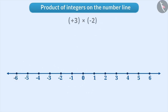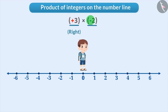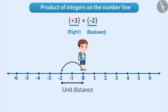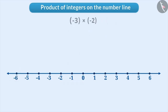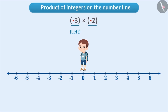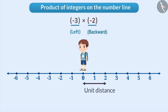In positive 3 into minus 2, the first number is positive, meaning the person is looking towards the right. Since the second number is negative, he will take three steps of two unit distance in the backward direction. Therefore, the result of multiplication is minus 6. In minus 3 into minus 2, the first number is negative, meaning the person is looking towards the left. Since the second number is also negative, he will take three steps of two unit distance in a backward direction. Therefore, the result of multiplication will be positive 6.